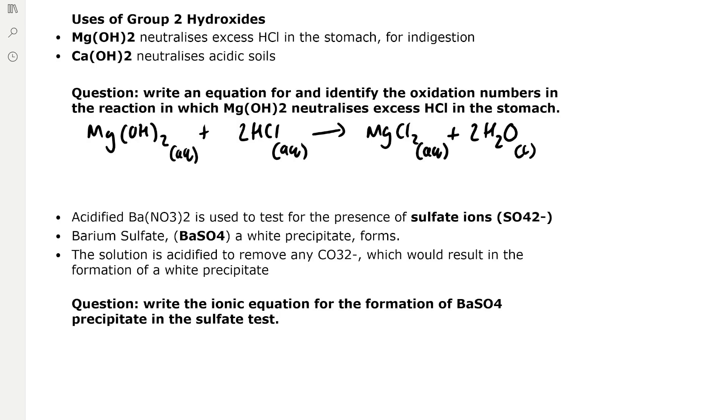The oxidation numbers: chlorine in HCl is going to be -1 and hydrogen is +1. Magnesium is +2 in magnesium hydroxide because oxygen is -2 and hydrogen is +1. So that gives an overall of zero for both compounds.